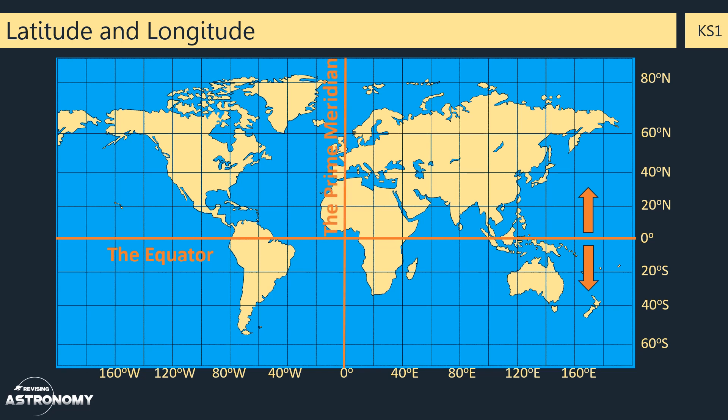Longitude is a measure of your angular distance to the east or west of the prime meridian, and again it's measured in degrees and minutes.